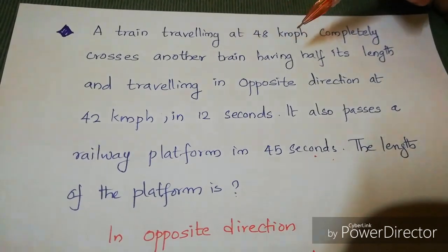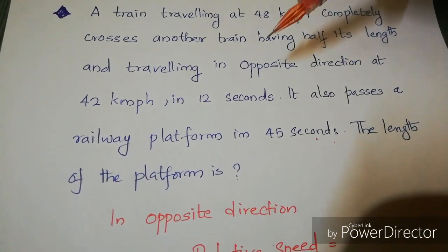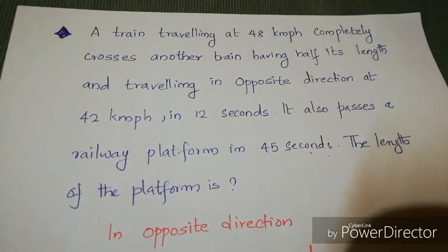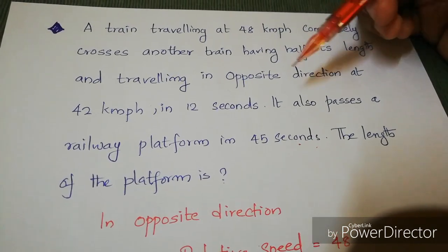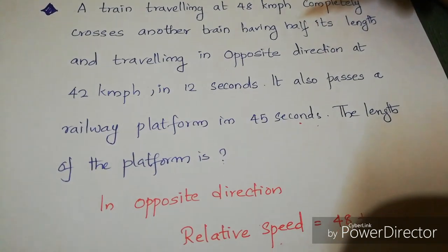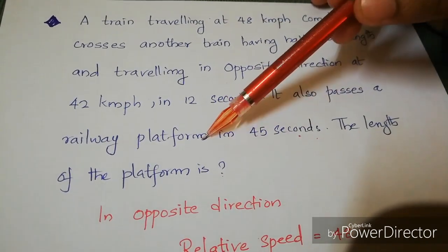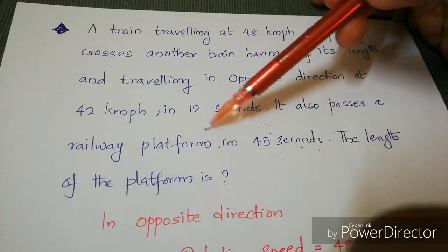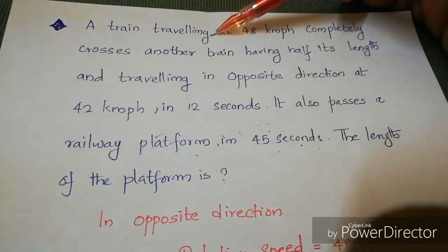Next question: a train traveling at 48 km/h completely crosses another train of half its length, traveling in opposite direction at 42 km/h, in 12 seconds. It also passes a railway platform in 45 seconds. Find the length of the platform. First, we find the length of the first train, then we can find the platform length.